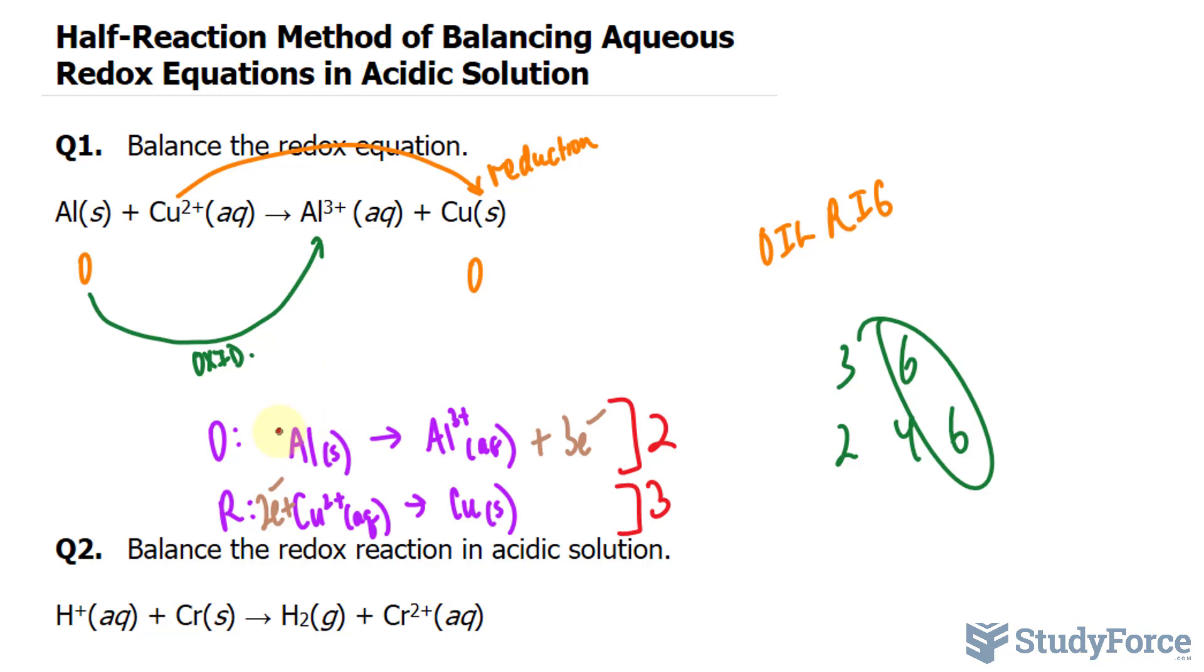By doing that, this becomes a 2, 2, and that becomes a 6. This becomes a 6. Notice the electrons are the same. That has a coefficient of 3. I apologize for the mess. And that has a coefficient of 3.